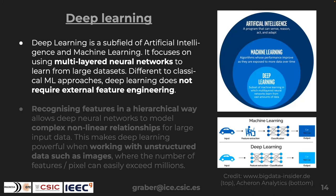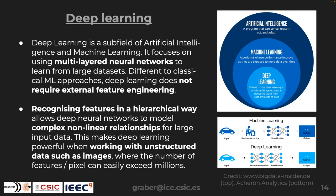Deep learning is a subfield of machine learning focused on multi-layered neural networks that learn non-linear relationships from high-dimensional data. The key advantage over classical machine learning is that it doesn't require a domain expert to manually engineer features — the neural network learns the best representations itself. This works particularly well with large datasets of unstructured data, especially images, where the number of inputs (pixels) can easily reach millions.